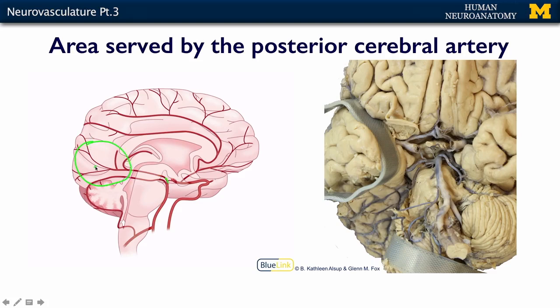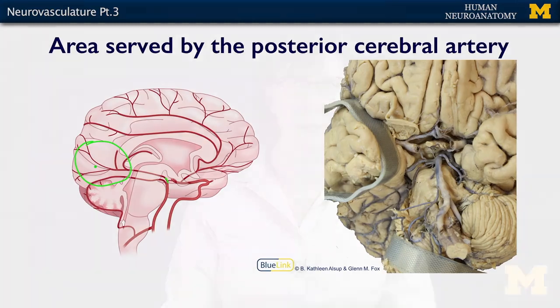So a stroke — one of the ways they talk about a stroke is a cerebrovascular accident, a CVA. I always think to myself, cerebral vascular accident — why would anybody do that on purpose? Of course it's an accident; nobody wants to plug up one of their blood vessels to their brain on purpose. But anyway, that's the terminology. The posterior cerebral artery feeds your occipital lobe.